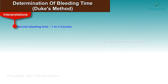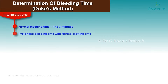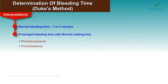Interpretations. The normal bleeding time is about 1 to 3 minutes. Prolonged bleeding time, sometimes with normal clotting time, can occur with thrombocytopenia, thrombasthenia, and idiopathic thrombocytopenic purpura.